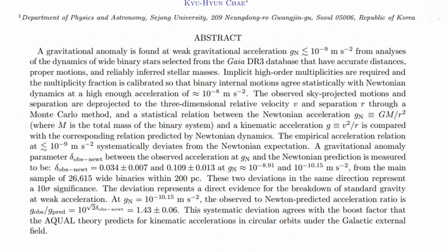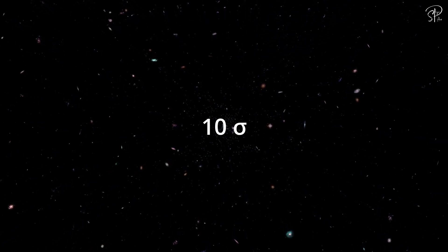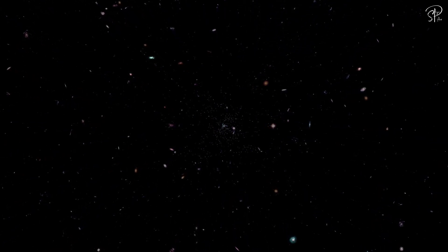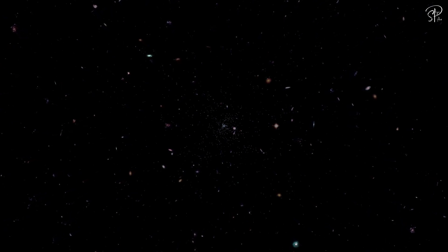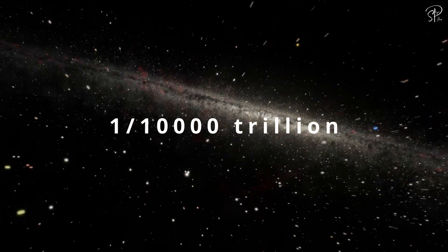But Che argues that at smaller separations, where the stars experience higher accelerations, the data aligns with Newtonian predictions. However, at large separations, where lower acceleration takes over, the data seem to favor MOND, specifically the Aqual version. They even claim a significant discovery with a statistical significance of 10 sigma, implying a minuscule chance of this being a statistical fluke. How minuscule, you ask? One in 10,000 trillion.